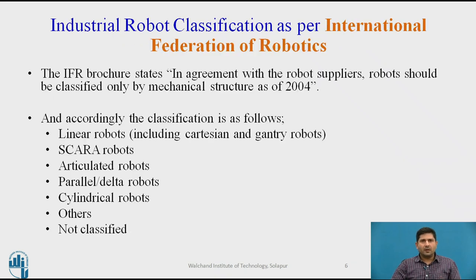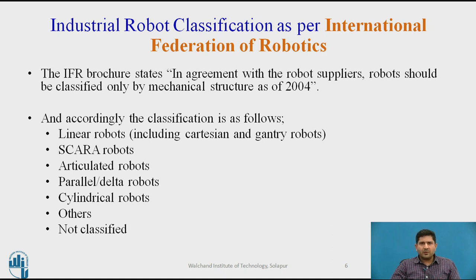Moving forward, robot classification as per the International Federation of Robotics — I have included this so that it makes a few things clear and so you can have a direct comparison with the information in textbooks. The IFR brochure clearly states that in general agreement with robot suppliers, robots should be classified only by mechanical structure. They have made it very clear that they are not following any other classification except for mechanical structure, which refers to the configuration we are about to discuss. As per that, they have linear robots which are basically Cartesian or Gantry.